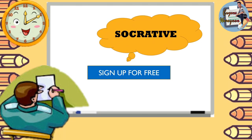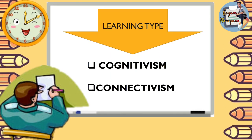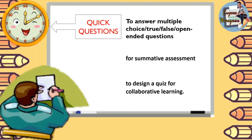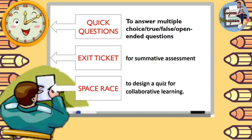Number 2 is Socrative, where you can sign up for free. It is good for community vision and connectivism as well. Examples of assessment tools include quick questions like multiple-choice, and open-ended questions. You can also have ticket-exit support assessment and pathways for collaborative learning.